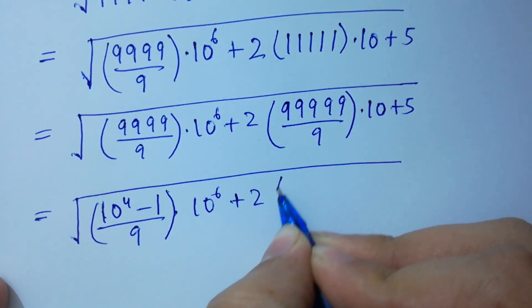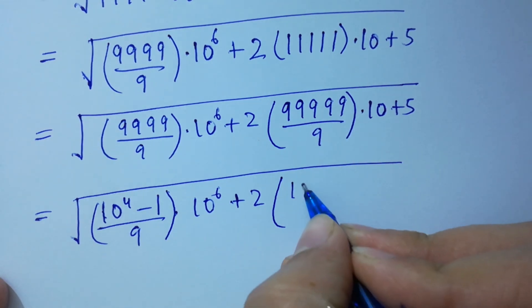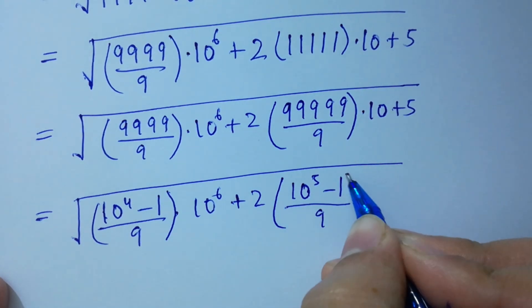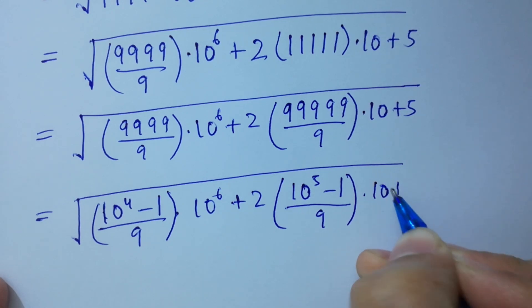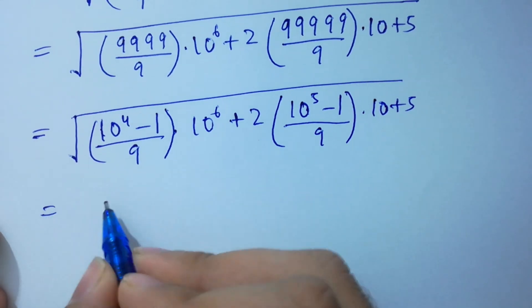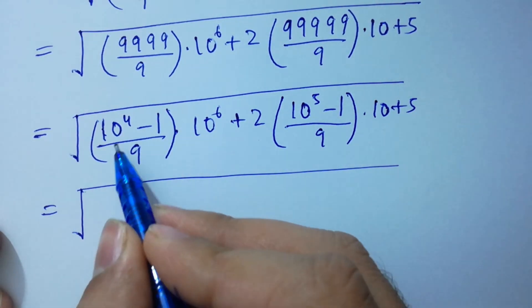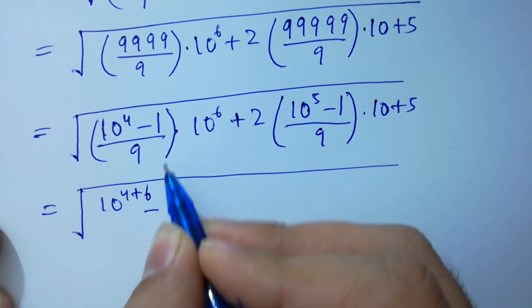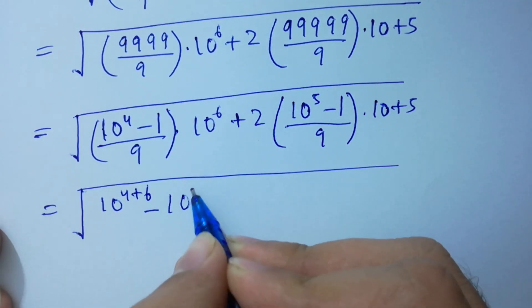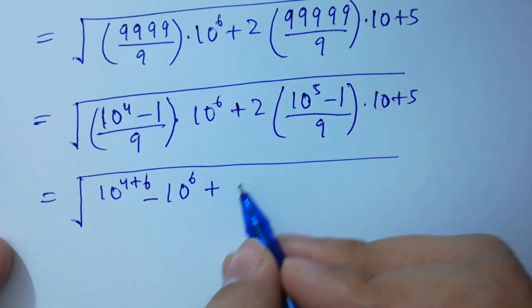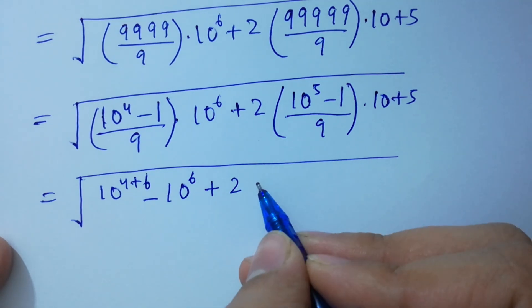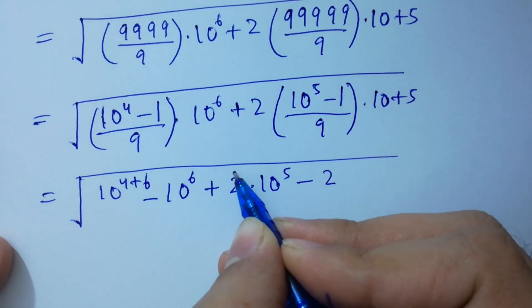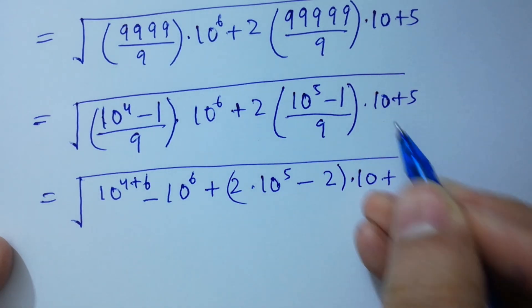Plus 2. Here 5 times 9, so 10^5 minus 1, which equals 5 times 9 over 9, times 10^6. Same base, powers add: 10^(4+6) minus 10^6, plus 2 times 10^5 minus 20 plus 45.